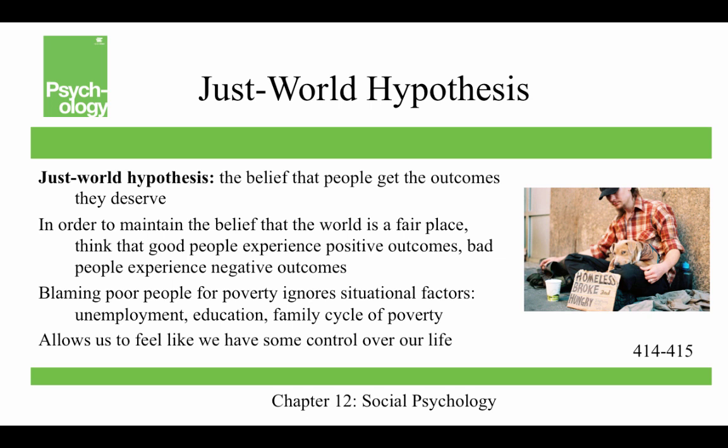The just world hypothesis is the belief that people get the outcomes they deserve. In order to maintain the belief that the world is a fair place, we think that good people experience positive outcomes and bad people experience negative outcomes. This would be like blaming poor people for poverty and ignoring the situational factors that led to the poverty — things like unemployment, lack of educational opportunities, a family cycle of poverty. Many people will make dispositional rather than situational attributions, because it allows us to feel like we have some control over our life.